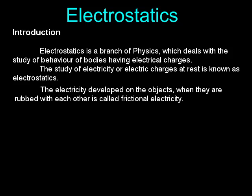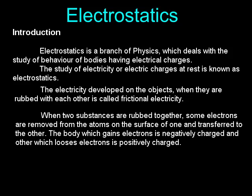The electricity developed on objects when they are rubbed with each other is called frictional electricity. When two substances are rubbed together, some electrons are removed from the atoms on the surface of one and transferred to the other. The body which gains electrons is negatively charged and the other which loses electrons is positively charged.